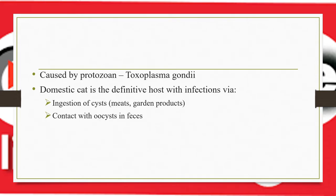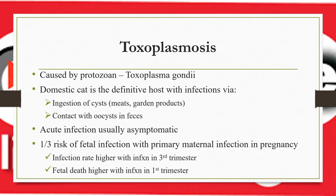Congenital toxoplasmosis is a parasitic disease caused by the protozoan Toxoplasma gondii. The domestic cat is the definitive host, with infection via ingestion of cysts through garden products, meat, or contact with feces. Acute infection is usually asymptomatic. There is approximately a one-third risk of fetal infection with primary maternal infection during pregnancy. The transmission rate is higher if infection occurs during the third trimester.